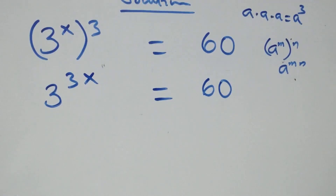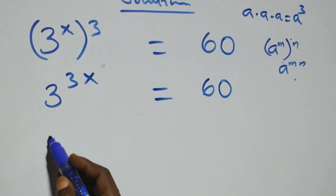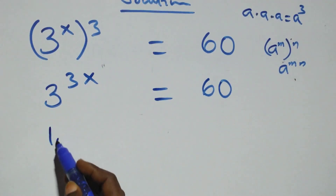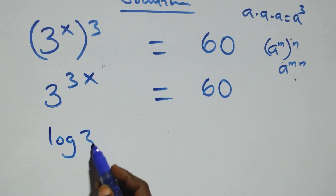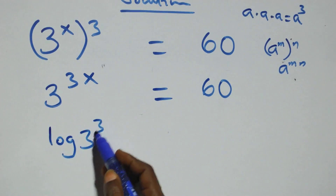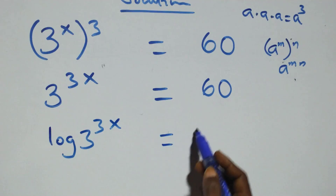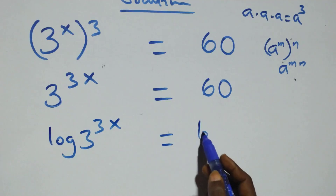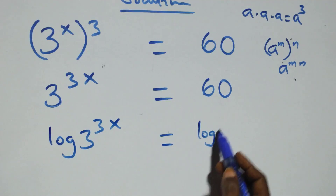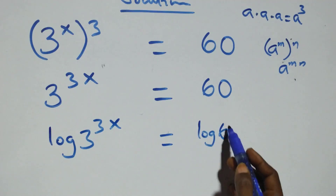The next step here, we take the log on both sides. Here we have log of 3 raised to power 3x equals to log 60 on this side.